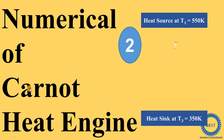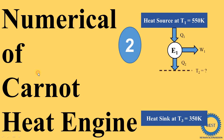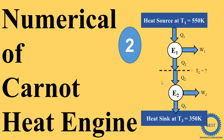In this video, we solve the numerical of Carnot heat engine. In these numericals, two Carnot engines are connected in series and we need to find out the intermediate temperature. In the first example we also find out the intermediate temperature, but there the efficiency of both engines is given as the same, whereas in these numericals the work done is given as the same for both engines.